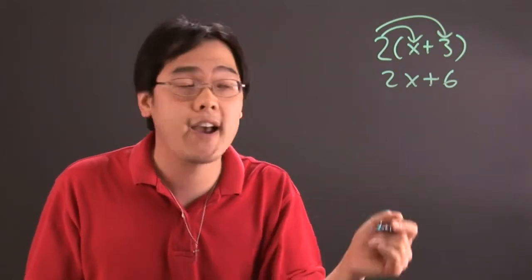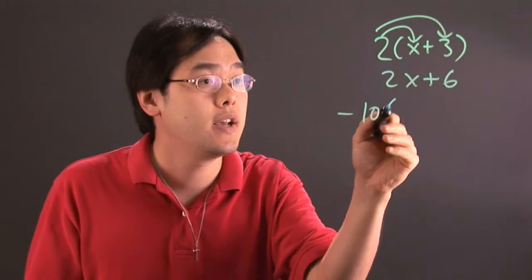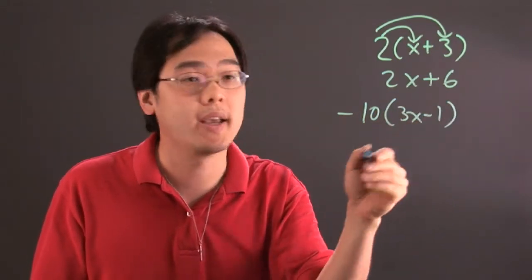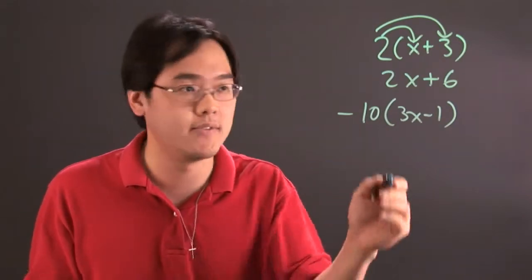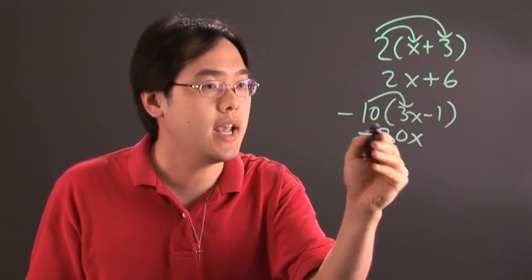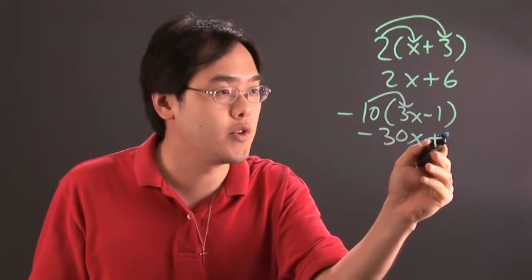Sometimes you may have a factor of a negative number like negative 10, and suppose the expression this time is going to be 3x minus 1. Again that means you're multiplying by that negative 10. So negative 10 times 3x is negative 30x and negative 10 times negative 1 is going to give you positive 10.